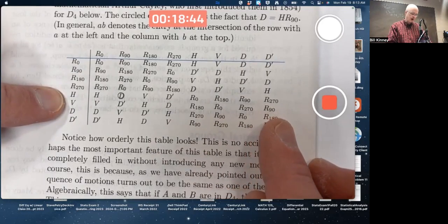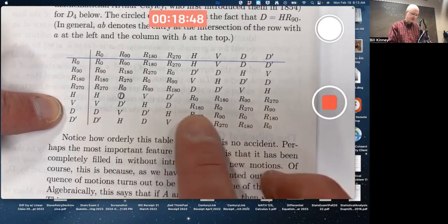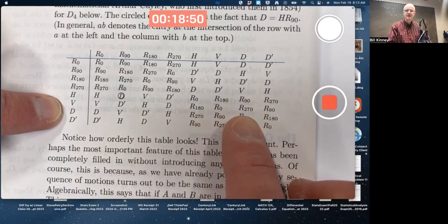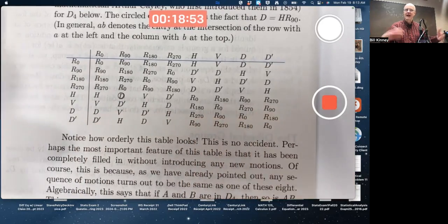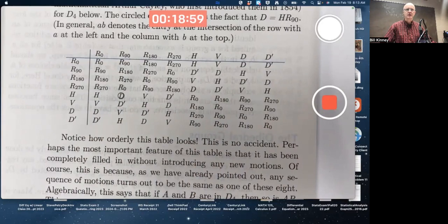H and D' leads to a similar problem. V and D leads to a similar problem. V composed with D is R270. V composed with D' is R90. We're getting these extra elements that have order 4. We're going to get a sub bigger than order 4 if we try to include all these things.